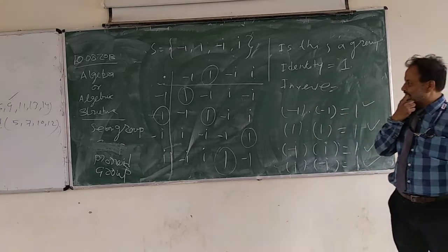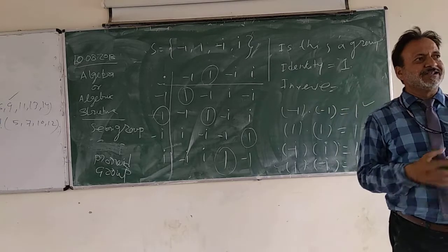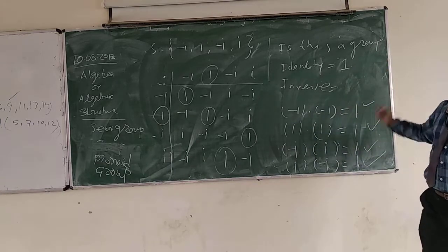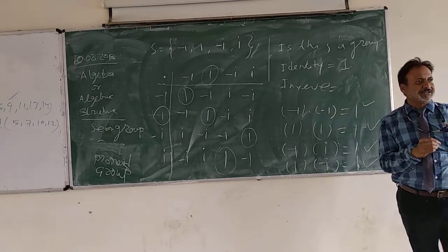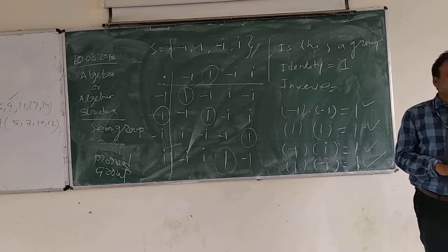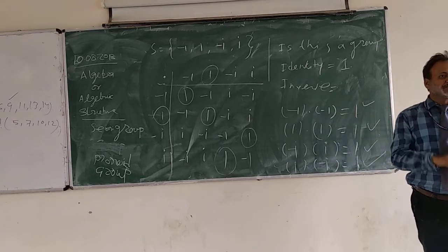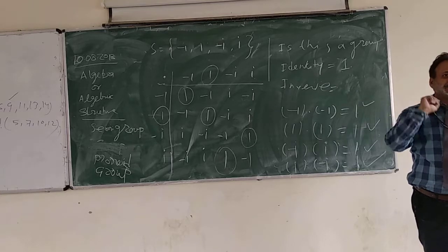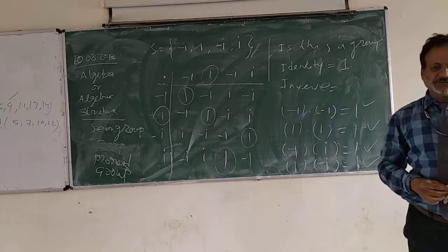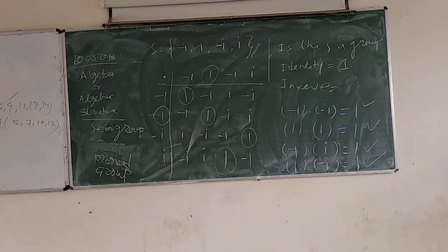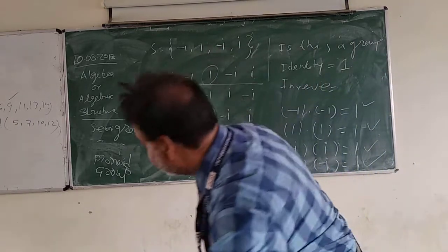So one thing we have answered: is this a group? Yes it is. For it to be a group, it should have an identity element, it should have inverses, and it should be associative. Now let us check associativity — if it is associative, then it is a group.